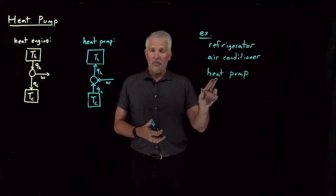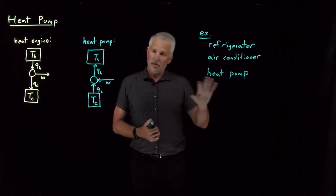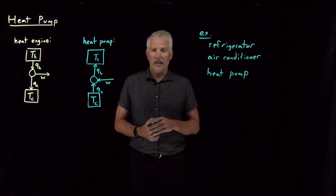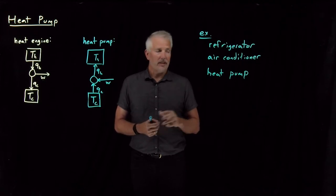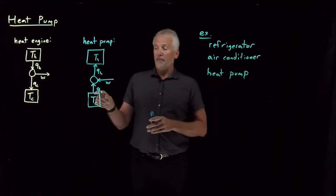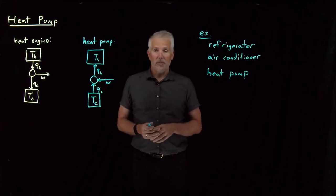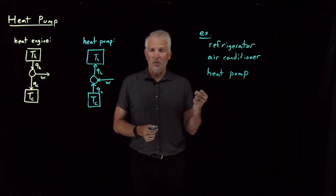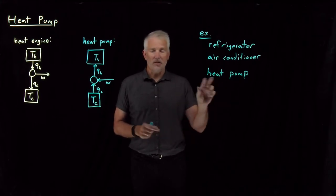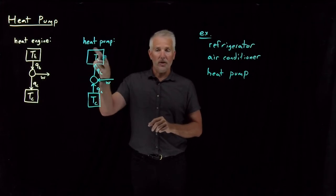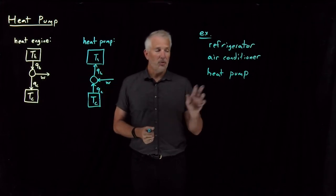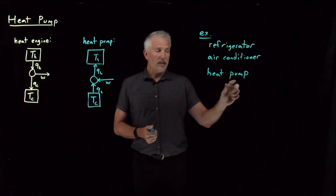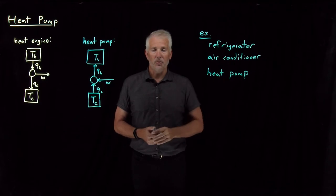Counter-intuitively, what your heat pump does in the winter when you warm your house — it's cold outside and warm inside — is it uses exactly this process. It extracts some heat from the cold winter outdoor air and dumps it into your house. So your house is like the place where the waste heat goes, and you're using that waste heat to heat up your house. When you run the heat pump in the wintertime, it's removing heat from the outdoors and dumping it into your house.